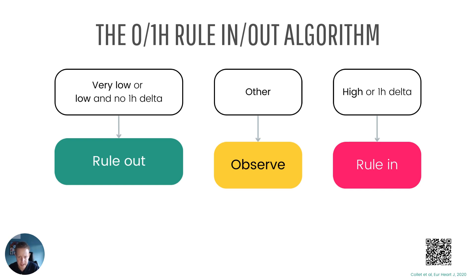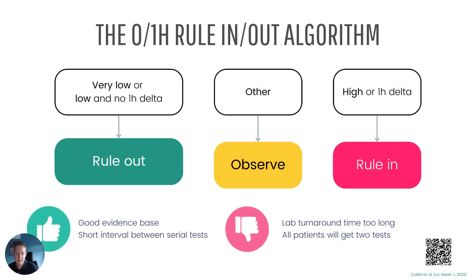If the troponin level is really high, or there's a significant change at one hour, we can rule in, leaving just a relatively small group in the observe category in the middle. This has a great evidence base and a short interval between tests, which is great for crowded emergency departments. However, lab turnaround time is often too long for us to see results before deciding whether a second test is needed, which means the second test could be done anywhere between one and three hours after the first. NICE recommends the second test be one to three hours later — that's a logistical issue rather than a limitation of the evidence base for the zero-one-hour algorithm.